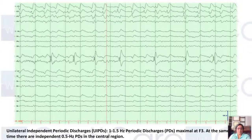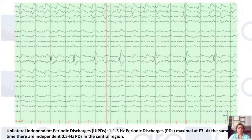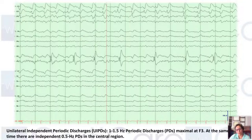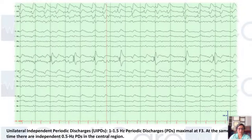This category of LPDs is called unilateral independent periodic discharges. Looking at this image, you can see discharges on the left side at 1 to 1.5 hertz, and there are independent discharges at the midline. They are still considered unilateral. If you are seeing discharges on one hemisphere and in the central region, the central one is to be considered on the side of the LPDs — not generalized, but unilateral and independent.